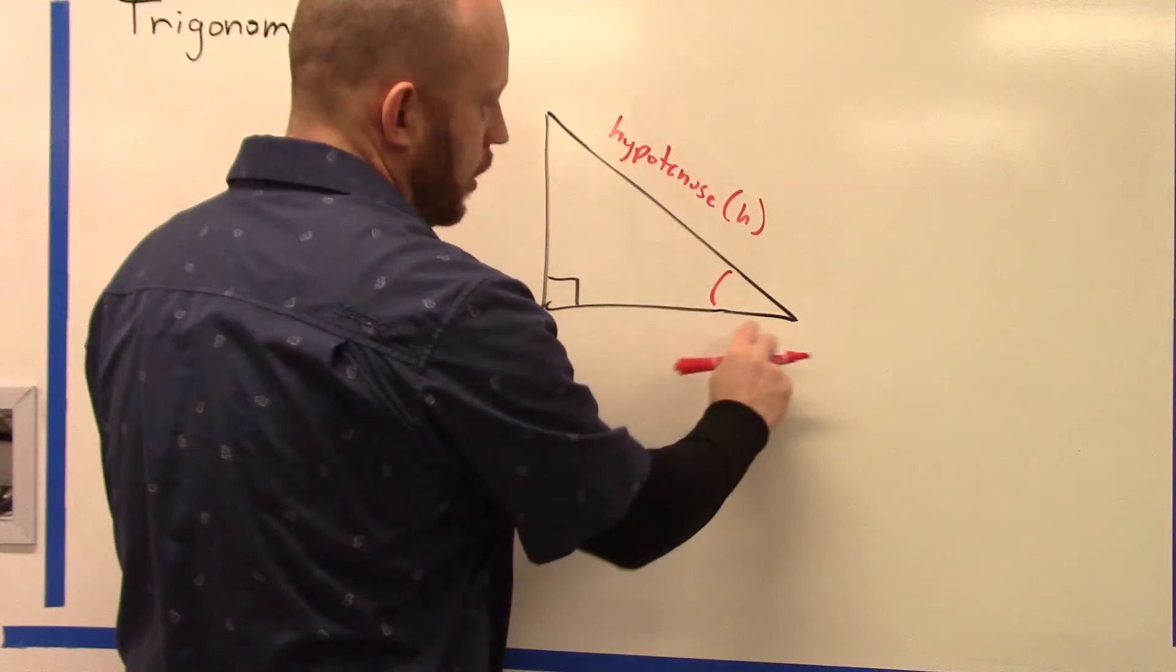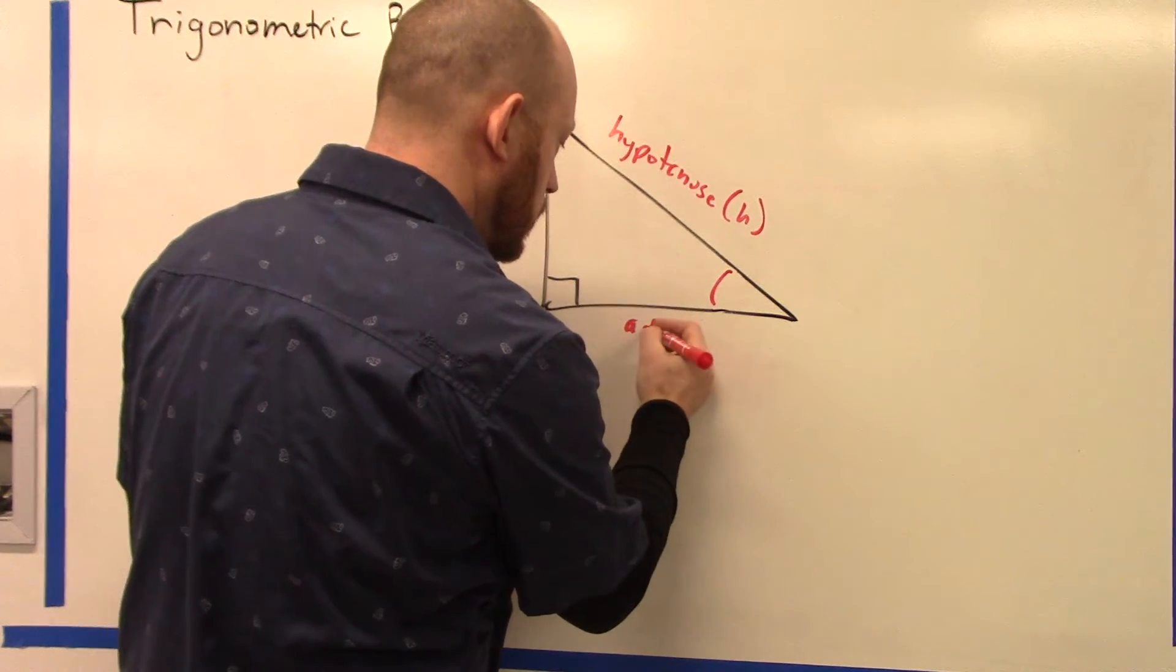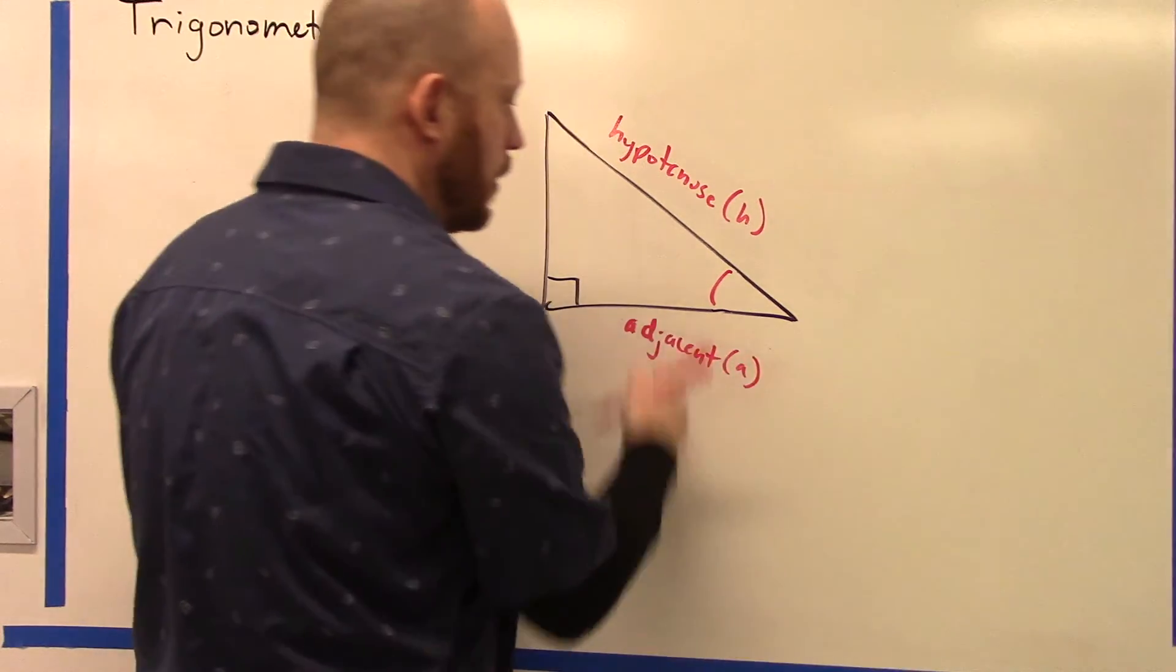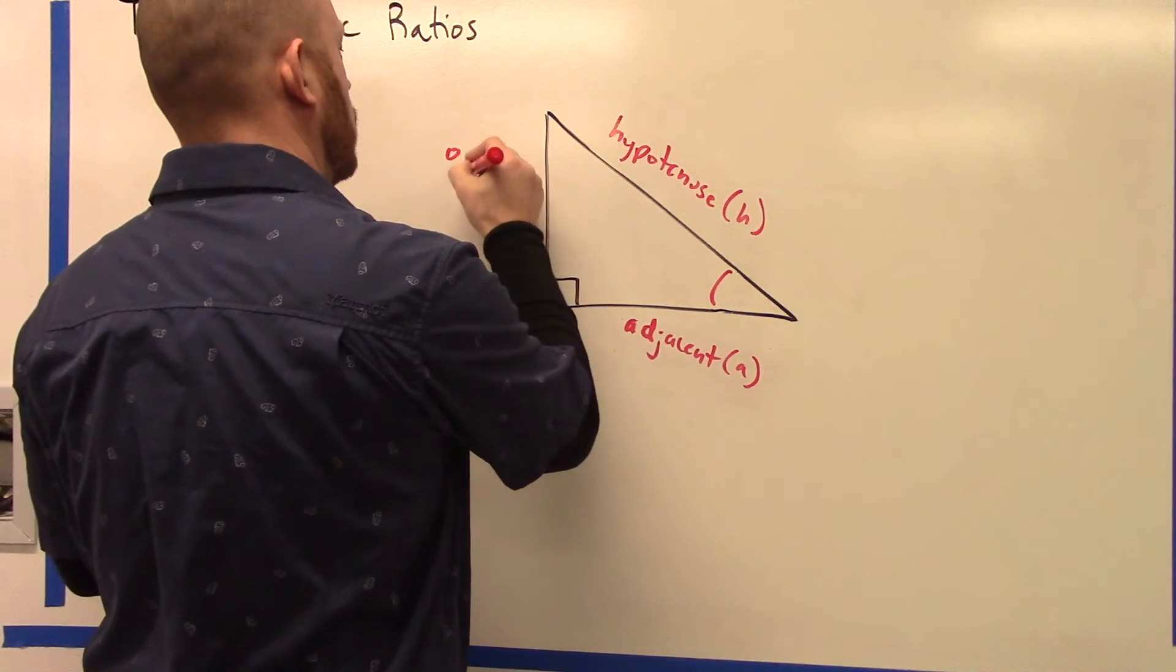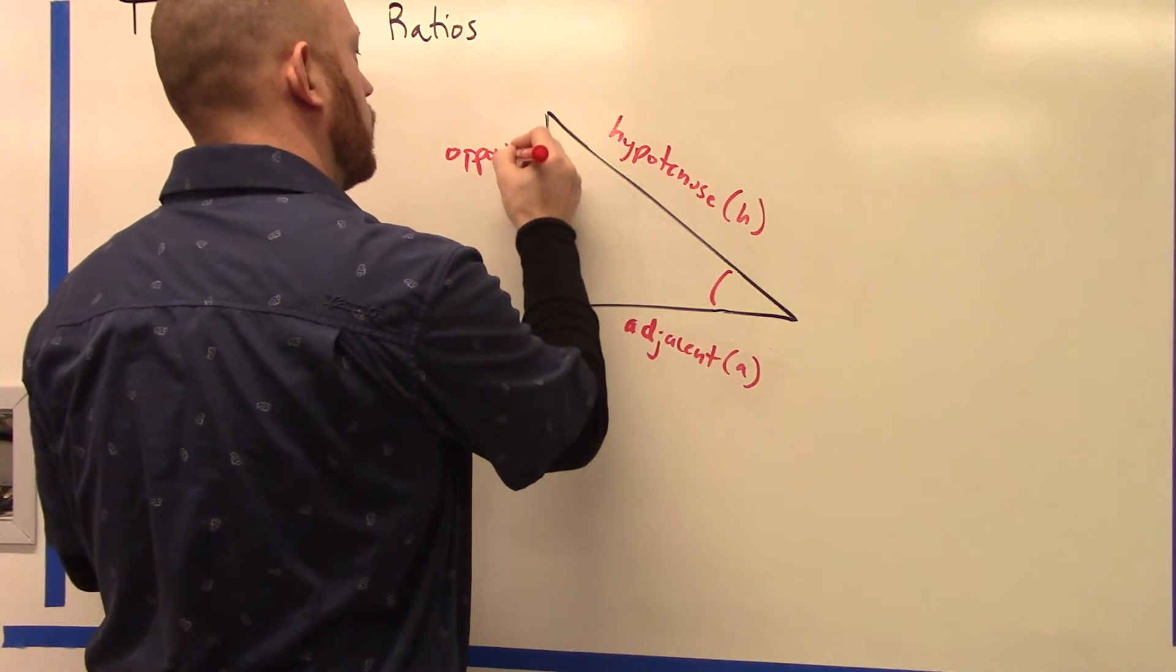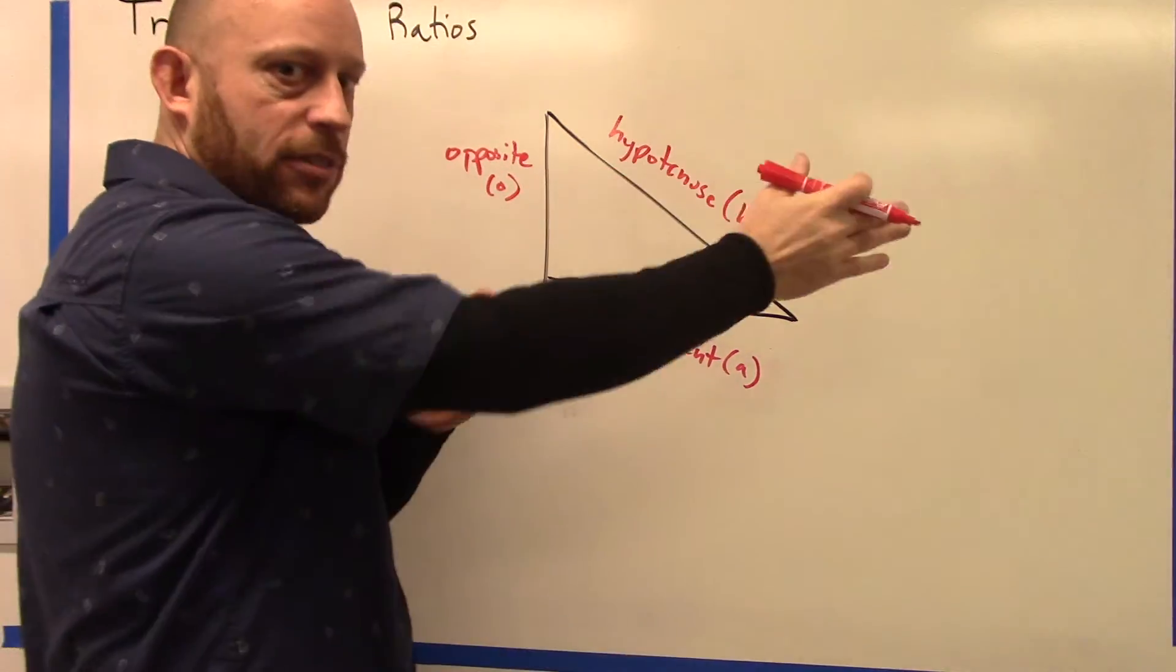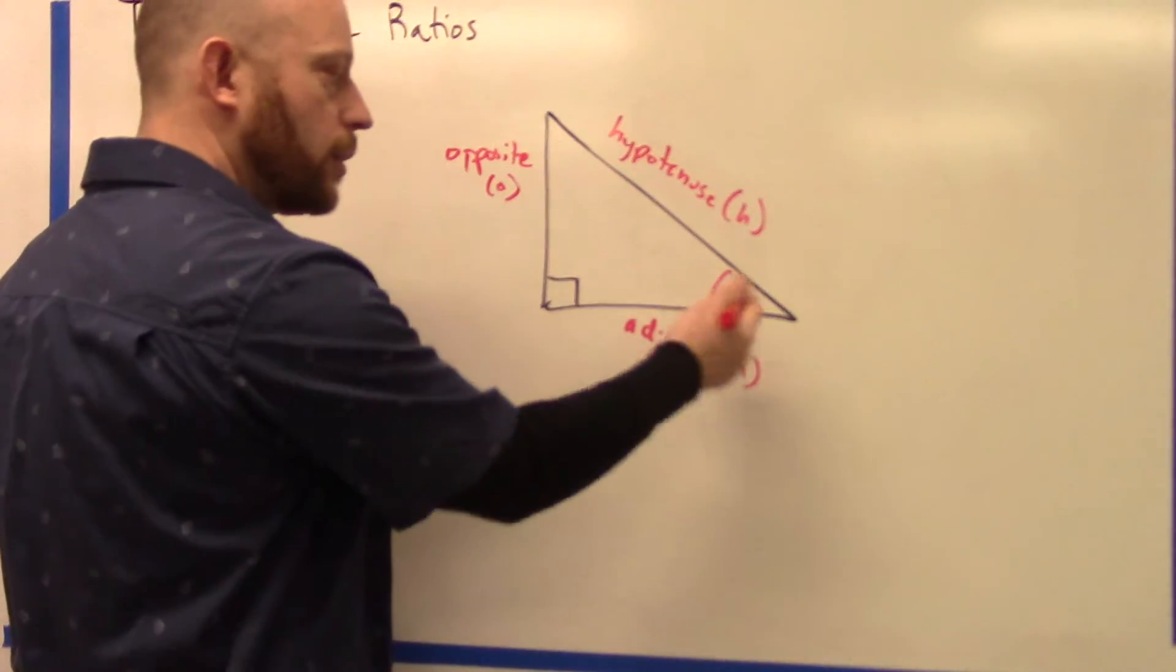So the hypotenuse is one leg, and then this is the other leg of this angle, so this would be called adjacent. And then the one across from it that isn't part of the angle is called the opposite. That's because it's across from it—it's opposite of it—and this isn't right next to it or adjacent to it. That's another way you can think of it.